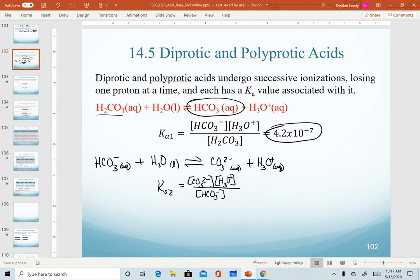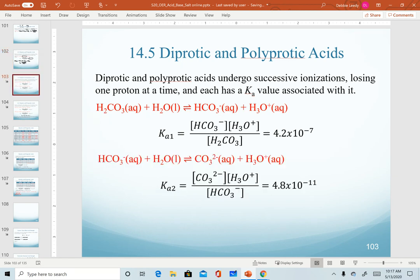And the key thing to recognize with diprotic and polyprotic acids is the relative values of your K. So Ka1 has an exponent of 10 to the minus 7. Ka2 has an exponent of 10 to the minus 11. This relationship is always true for any diprotic or polyprotic acid.